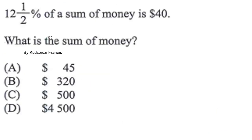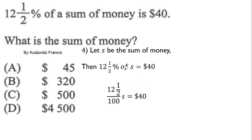This is the fourth question: 12 and a half percent of a sum of money is $40. What is the sum of money? Let the sum of money be s, then 12.5% of s equals $40. The word 'of' means multiplication, so 12.5/100 times s equals 40. This simplifies to 0.125s equals 40.